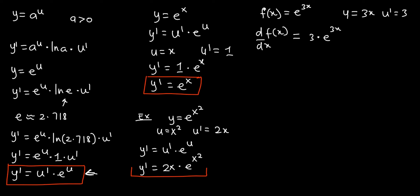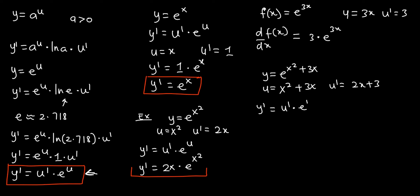Let's take another example where y equals e to the power x squared plus 3x. In this case, u equals x squared plus 3x. So u' equals 2x plus 3. We know that y' equals u' times e to the power u, and we already have u'. So y' equals 2x plus 3, multiplied by e to the power x squared plus 3x. This is our answer for this case.